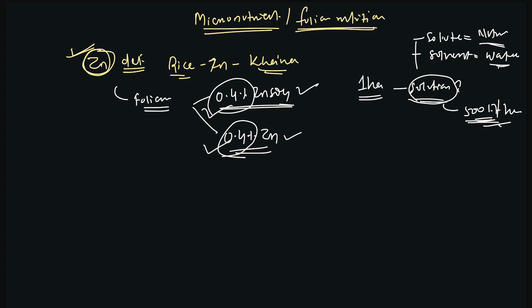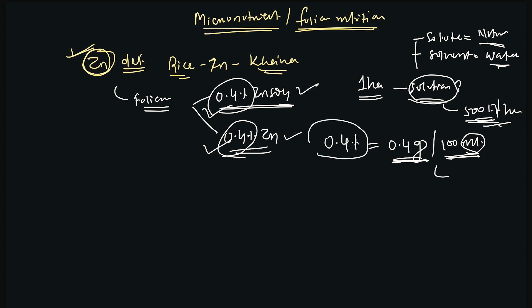What does 0.4% mean? Percentage means out of 100 — how much. So 0.4% means 0.4 grams per 100 mL. The solute may be in solid form, in which case it is measured in grams, or in liquid form, measured in milliliters. The solvent is in liquid form so we assign it in mL. So if we are adding 0.4 grams of solute in 100 mL of solvent, we can prepare a 0.4% solution.